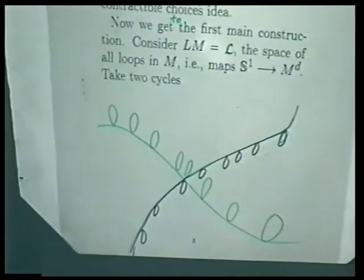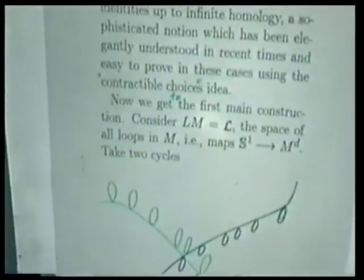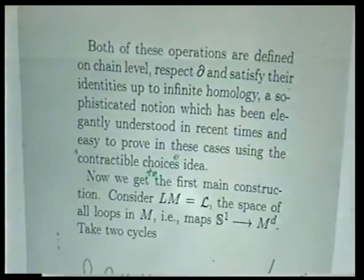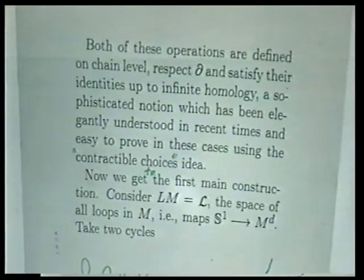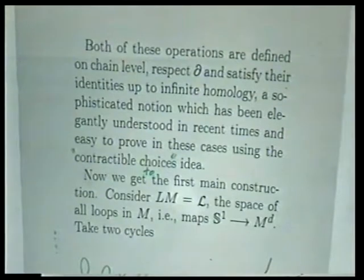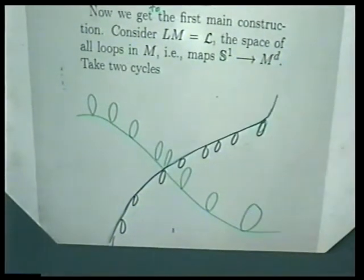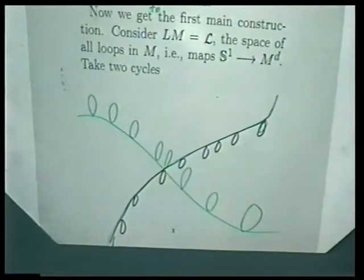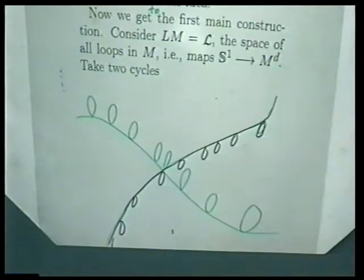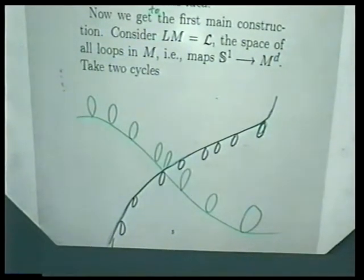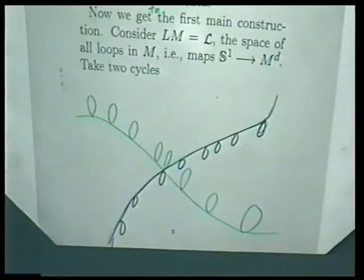Both of these operations — namely intersection of cycles in a manifold, or the multiplication of cycles in the based loop space — are defined on the chain level. You can actually perform these operations on the chain level. They respect the boundary in the sense that when you intersect two chains with boundary, the boundary of the intersection follows the usual formula. These product structures are at the chain level and they respect the boundary operator — the Leibniz rule is true. That's why they pass to homology.